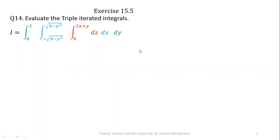The triple integral given here has limits from 0 to 2 for variable y, limits from negative square root of (4 minus y squared) to square root of (4 minus y squared) for variable x, and limits from 0 to 2x plus y for variable z.